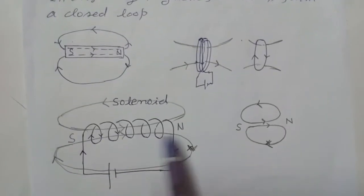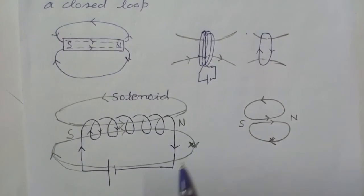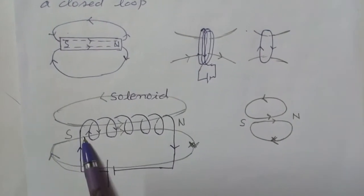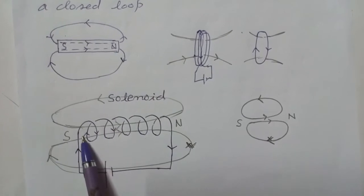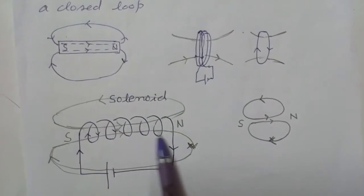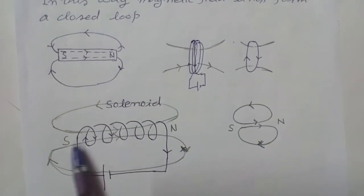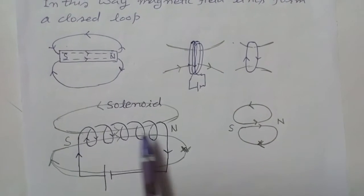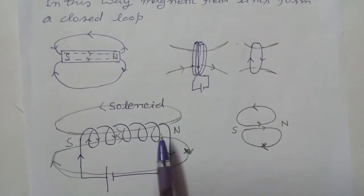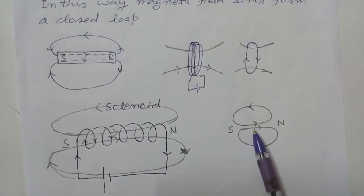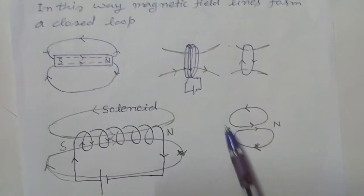See in a solenoid — magnetic field lines are emerging from the north pole and they terminate at the south pole. Inside the solenoid, their direction is from south to north, because we know there is a magnetic field inside the current carrying solenoid. So in this way, magnetic field lines form a closed loop.